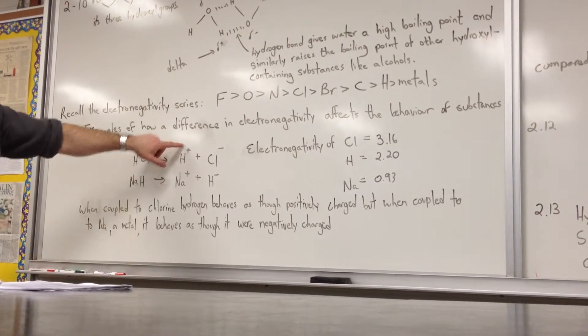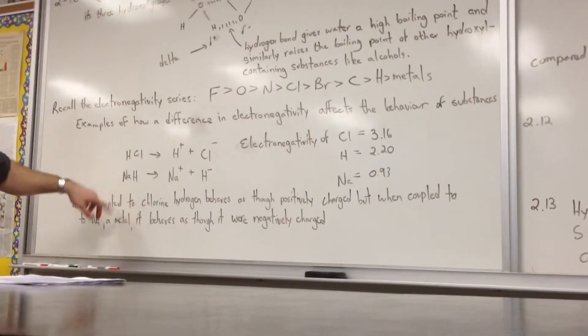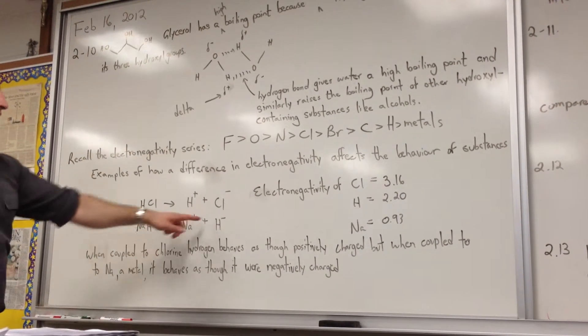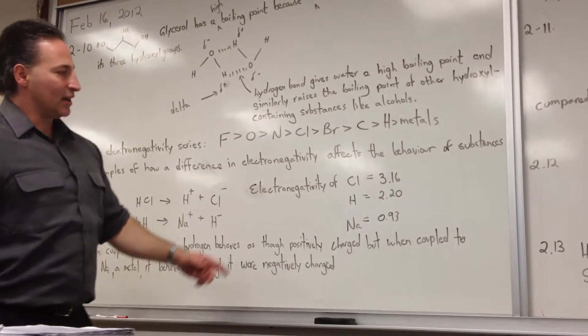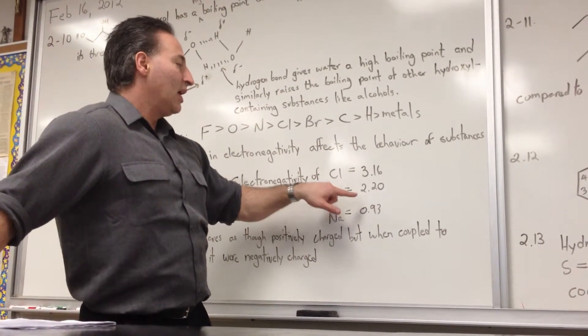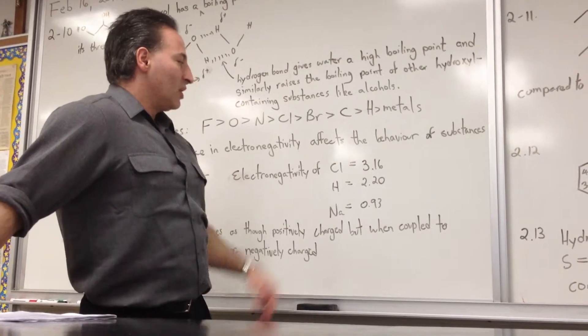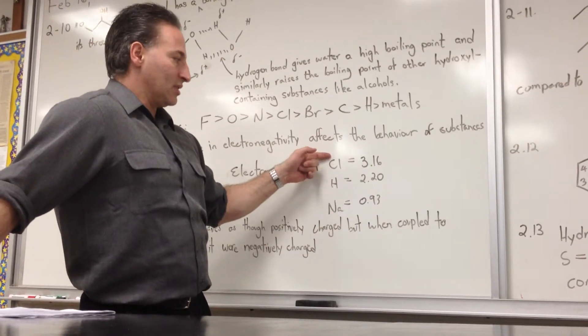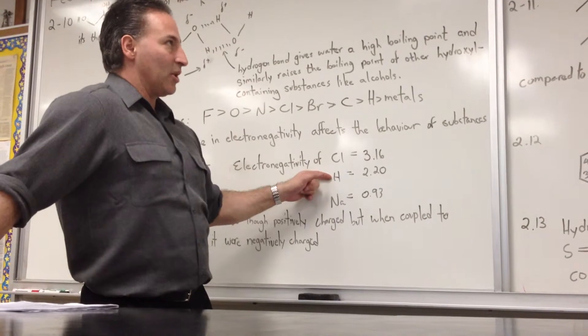Whereas when you couple it with sodium, to form sodium hydride, the hydrogen is behaving as though it has a negative charge. We see that the electronegativity of chlorine is much higher than the electronegativity of hydrogen, and the electronegativity of hydrogen, in turn, is much higher than the electronegativity of sodium. So when you couple chlorine with hydrogen, it's the chlorine that hogs the electrons. When you couple hydrogen with sodium, on the other hand, hydrogen is the one that ends up hogging the electrons.